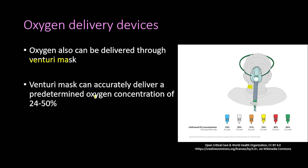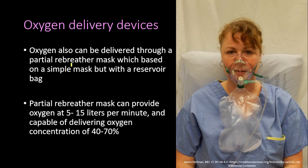The Venturi mask can accurately deliver a pre-determined oxygen concentration of 24 to 50 percent. The partial rebreather mask is based on the simple mask but with a reservoir bag. It is essentially a simple face mask with a reservoir bag and two holes on the sides. The partial rebreather mask can provide oxygen at 5 to 15 liters per minute and is capable of delivering an oxygen concentration of 40 to 70 percent.